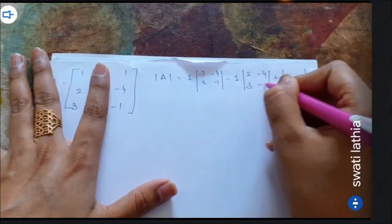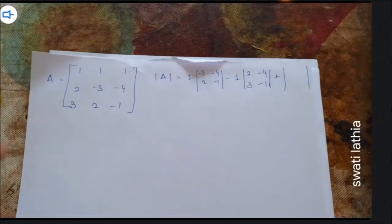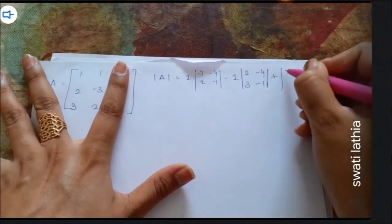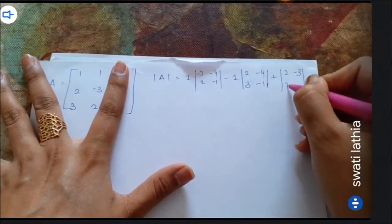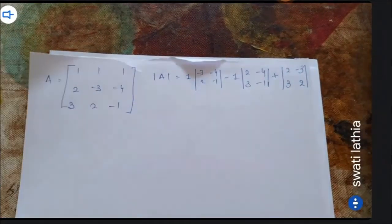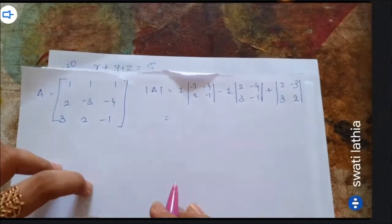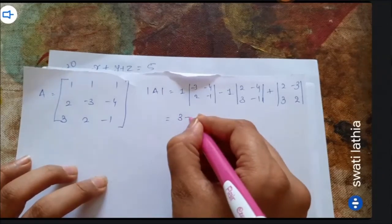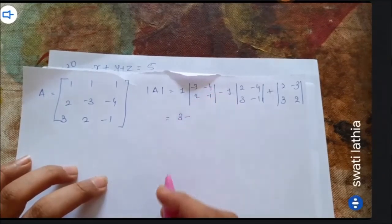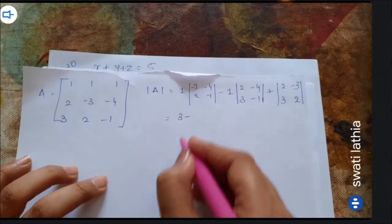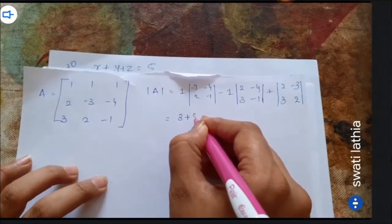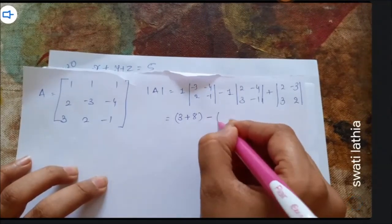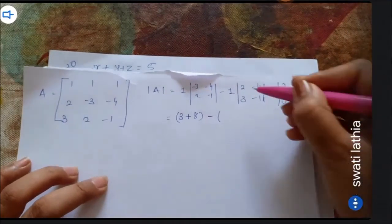The determinant expansion gives: first element involves the 2×2 minor from rows 2-3, columns 2-3; second element from columns 1,3; third element from columns 1,2. Cross multiplication: minus 3 into 1 is minus 3, plus minus 4 into 2 is minus 8.